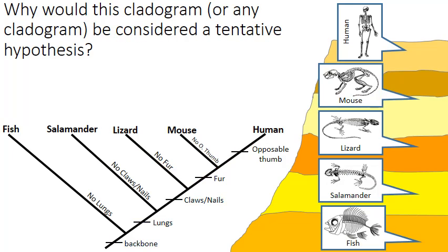Why would a cladogram be considered a tentative hypothesis? The reason is that we're always learning more information. We're building cladograms with the information we currently have. New discoveries and observations could shed more light and change our view of their evolutionary history. If we're using fossils, the fossil record is very incomplete — there are gaps, you don't often get full fossilized skeletons, only fragments. We might be misinterpreting the fossil evidence. So a cladogram is our best hypothesis, the best guess at the time it was created, and new information could cause it to be recreated.